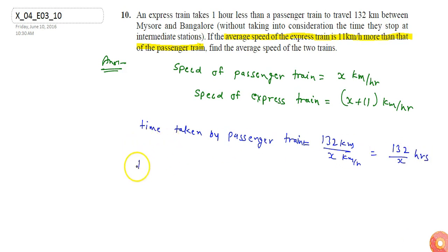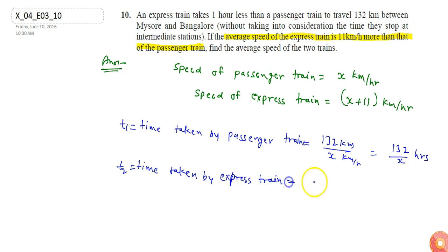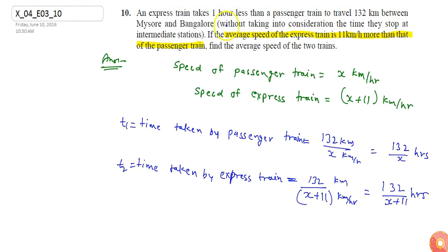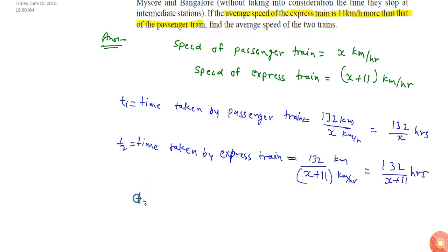The time taken by the express train, t2, will be 132 divided by x plus 11 hours. Now in the question it is given that the express train takes one hour less than the passenger train, so t2 equals t1 minus 1.